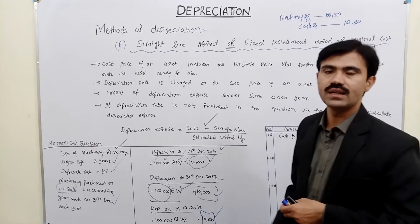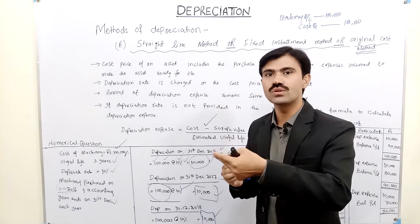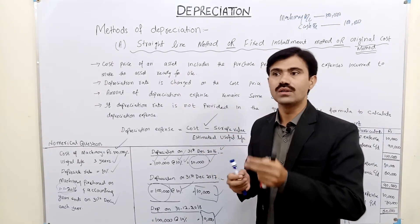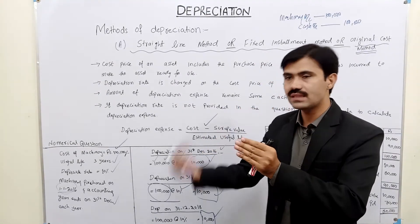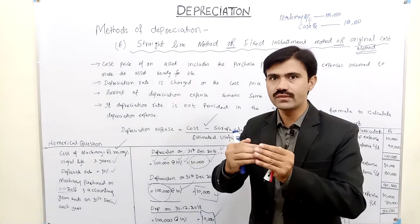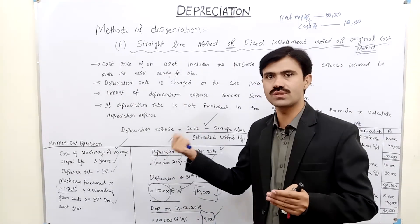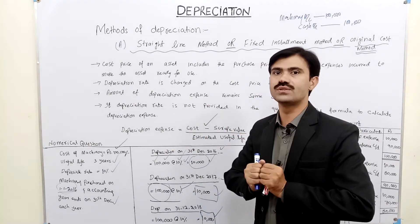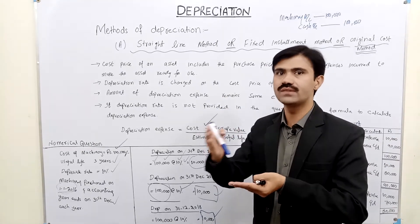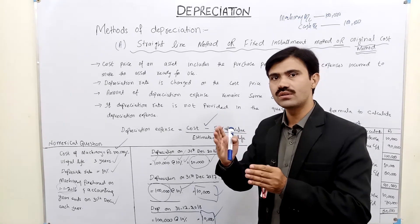For depreciation expense: expense increases, so we debit depreciation expense. Depreciation reduces the value of the asset — in this case, machinery — so machinery account is credited. Asset value decrease means credit. The entry is: Depreciation Expense debit, Machinery Account credit.